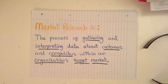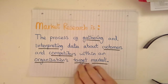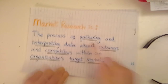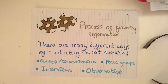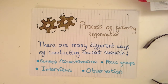The first part of market research is the process of gathering information. There are many ways you could go about gathering information, but a few that I'm going to go through today are surveys and questionnaires, focus groups and interviews, and observation.